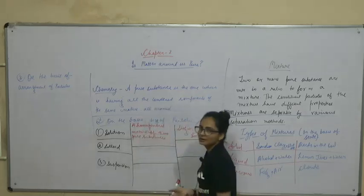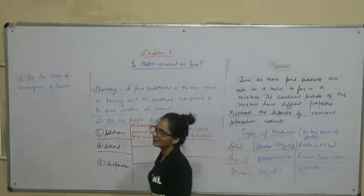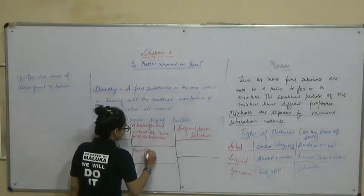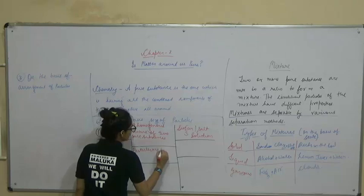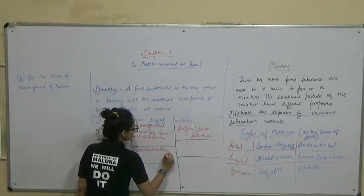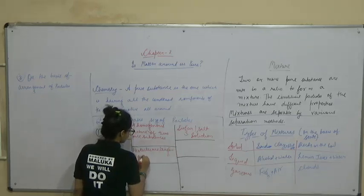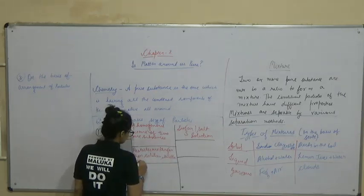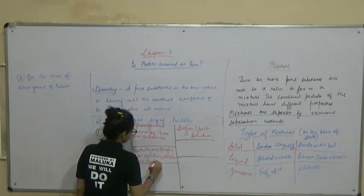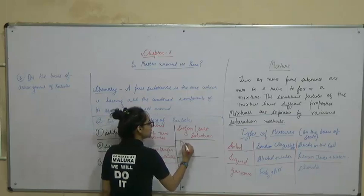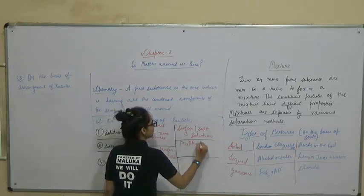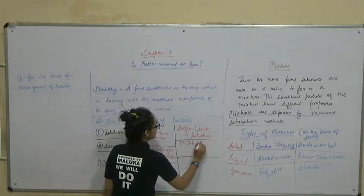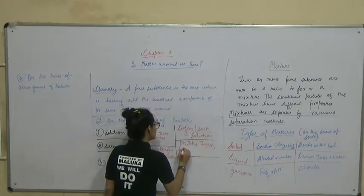What is a colloid? A colloid is also a homogeneous mixture in which the particles are smaller than suspension but larger than a solution. For example, milk is a kind of colloidal solution. Fog is also a kind of colloidal solution. You can also write juice and various kinds of syrups as examples of colloids.